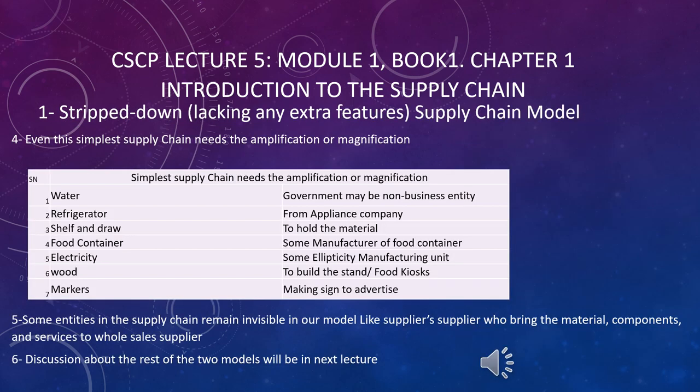Here we talk about the amplification of the simplest supply chain model. Even a very simple supply chain model needs magnifications or amplifications — there are a lot of things involved. Like you need water to mix things, which may come from the government. You need refrigerators to save the finished goods stock. You may need an oven to cook the cookies. You need shelves and drawers to put your material, food containers to mix the eggs and other things, and electricity for the oven or refrigerator. You need wood to build the stand or booth, and markers to write your advertisement on the booth.